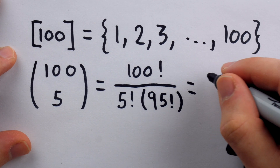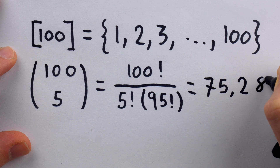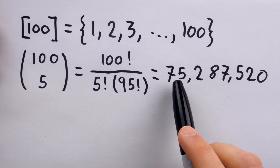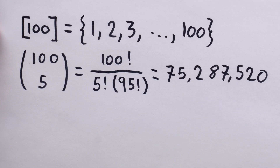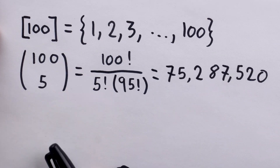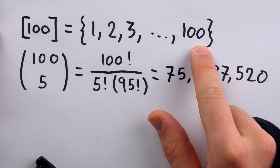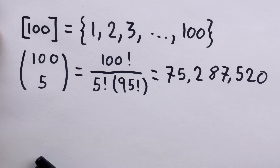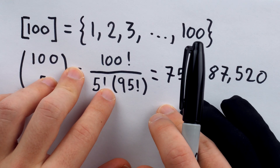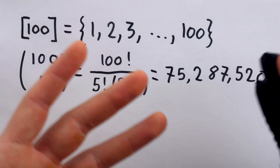100 choose 5 equals 75,287,520. The problem is that this doesn't actually count all the possibilities relevant to our situation — it's just counting combinations of five numbers from this set without permitting repetition, which is permitted for the lottery game. So how do we adjust our counting strategy to account for the fact that repetition of a number is allowed?